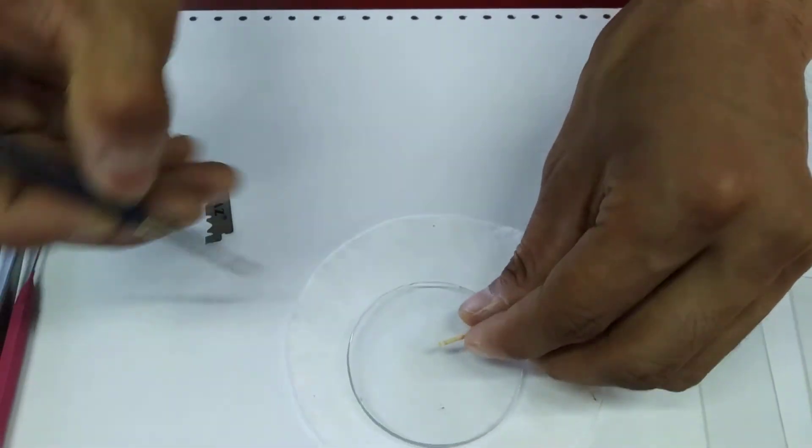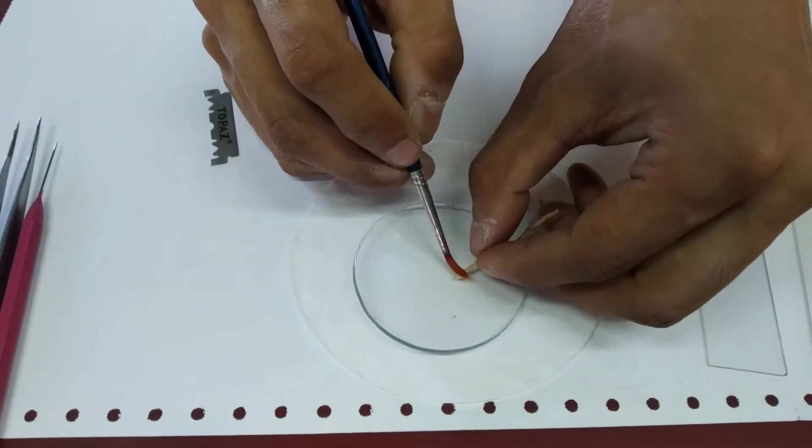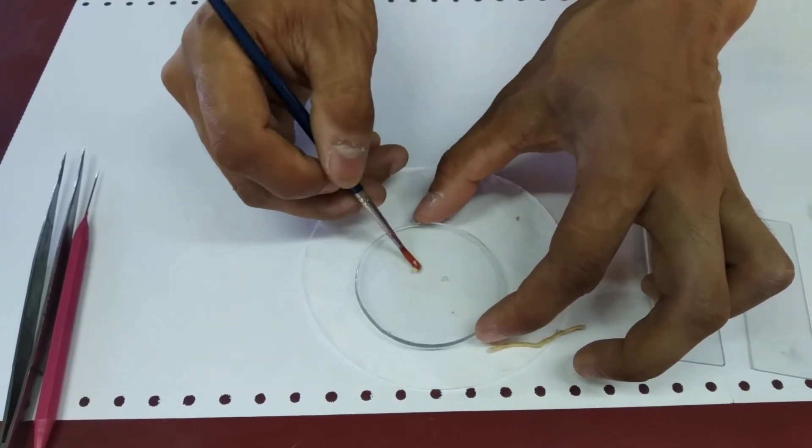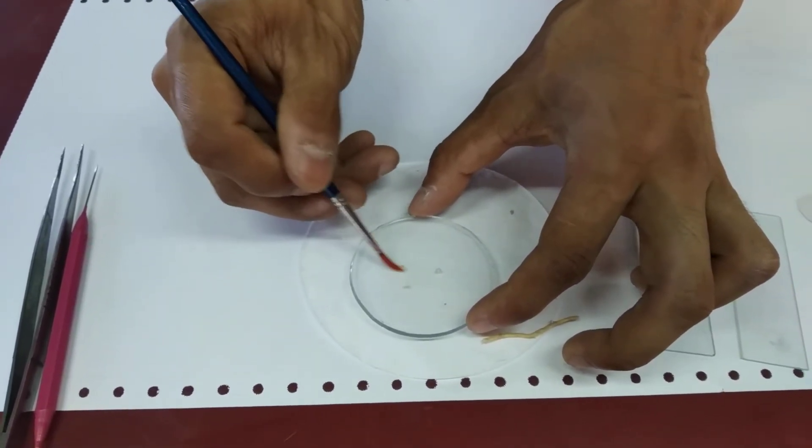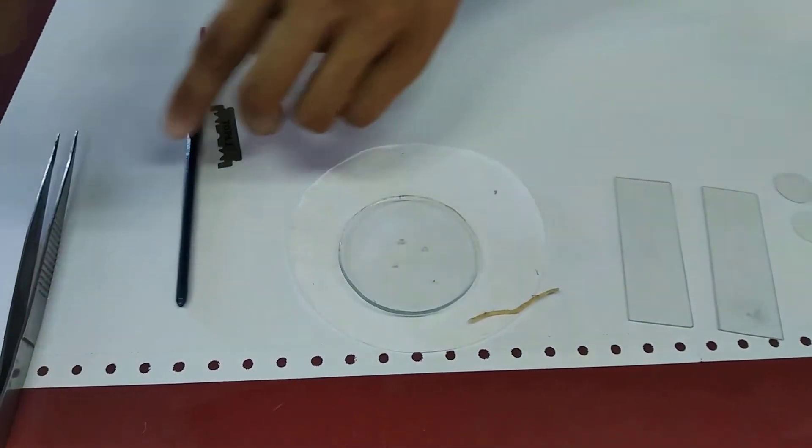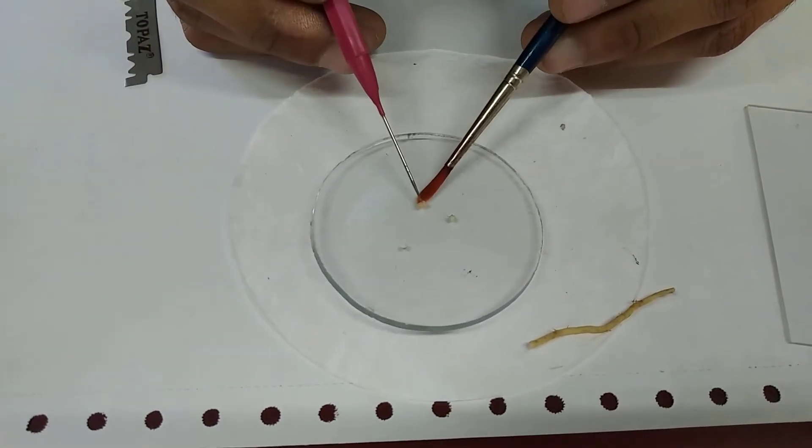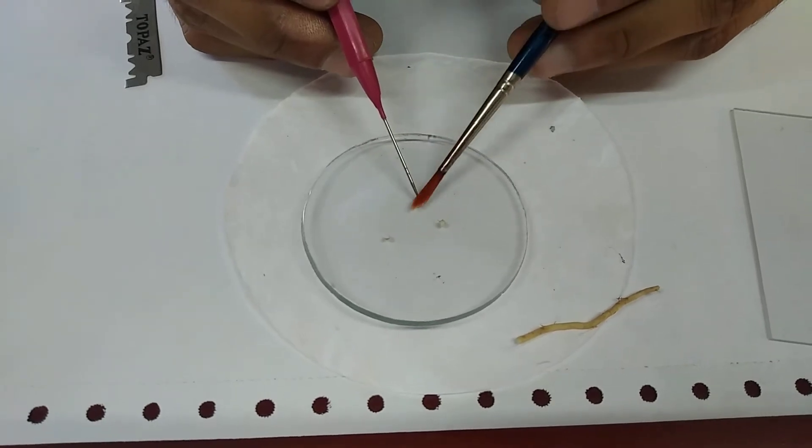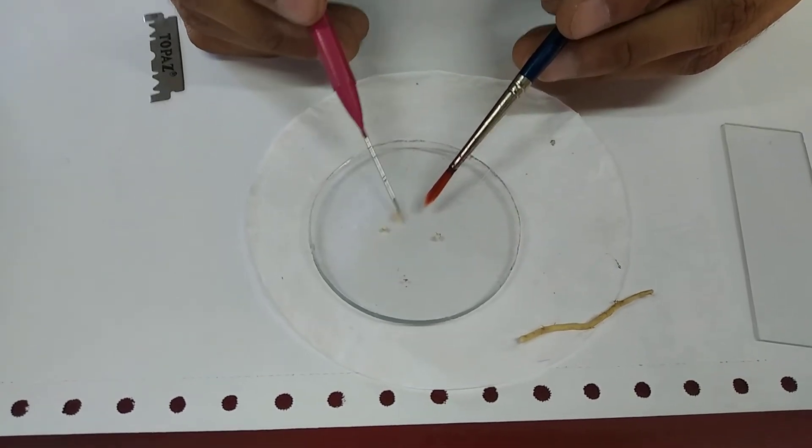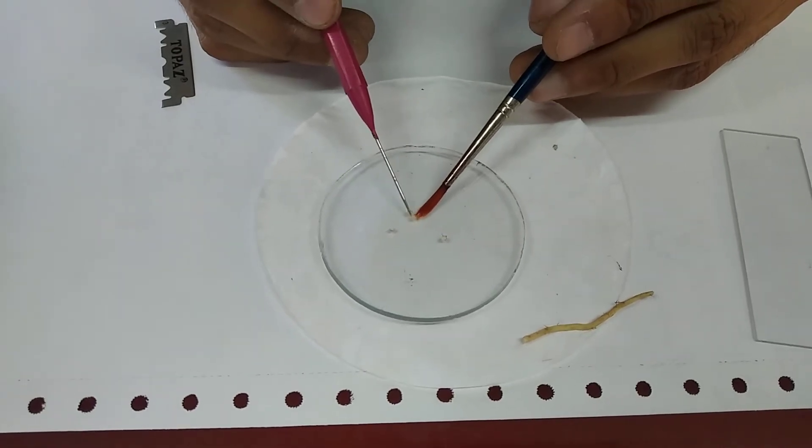After cutting the sections, transfer them to a watch glass. Cut many sections and select the thinnest one.